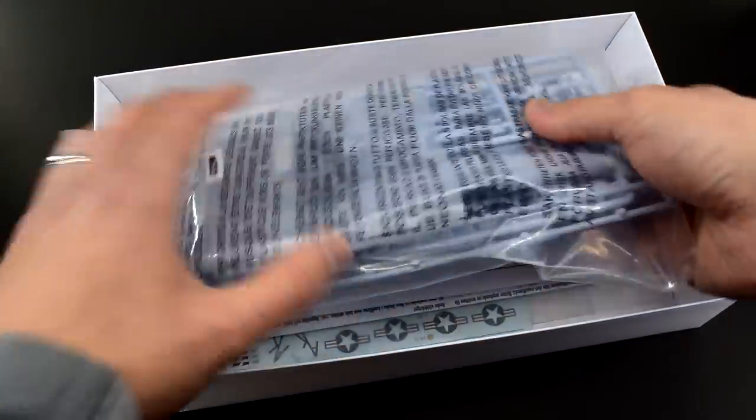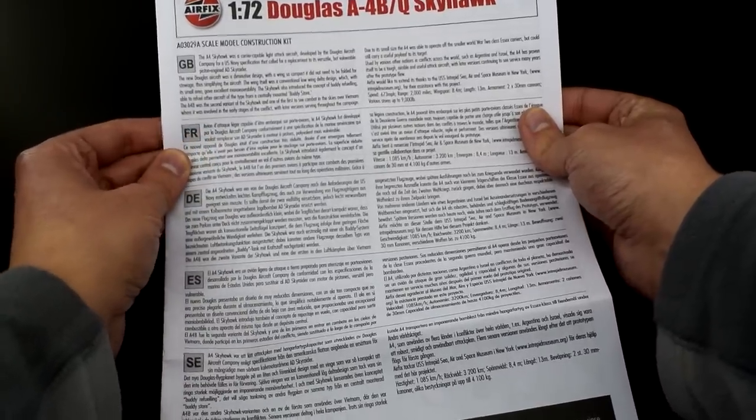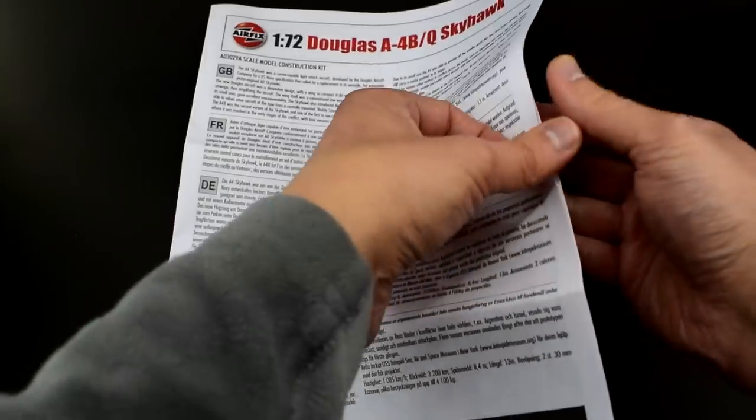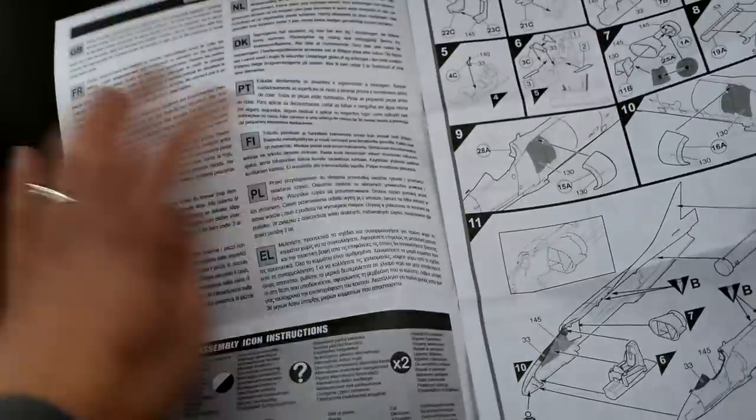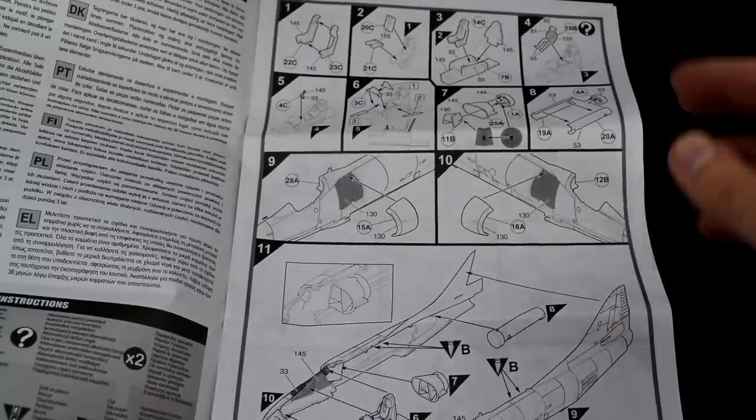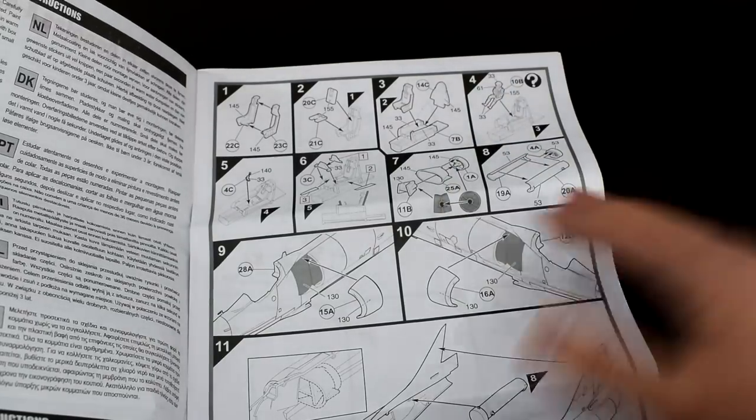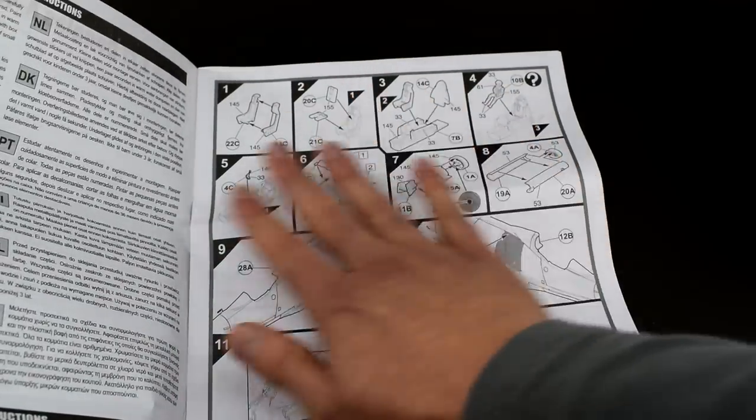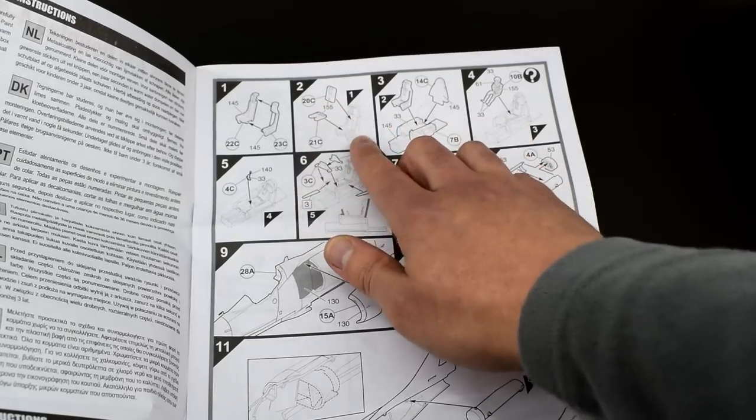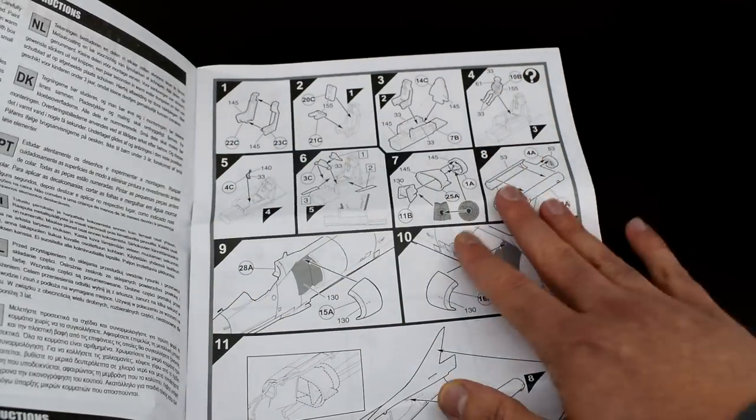First up I'm going to take a look at the instructions just like normal. These are to the normal format from Airfix. Front page has some general information about the Skyhawk. Flipping over we've got safety information and the key to the different symbols you'll encounter. Then we get on to the actual step-by-step pictures which are drawn to the normal standard. These are quite well laid out with the paint colour call-outs for each different part.